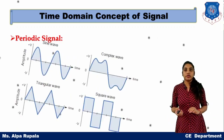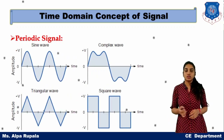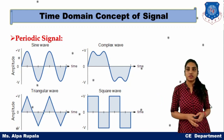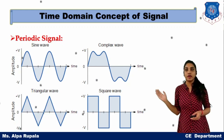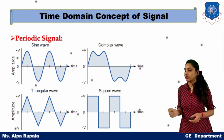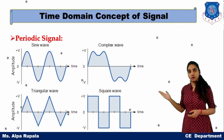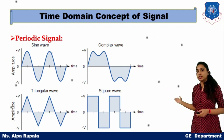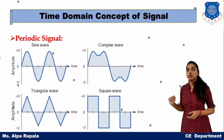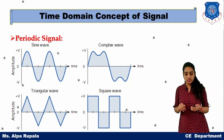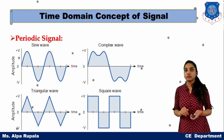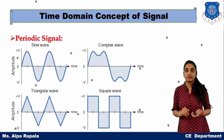You can see different forms of periodic signals: sine wave, complex wave, triangular wave, and square wave. These are all examples of periodic signals.